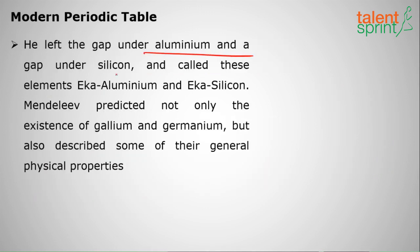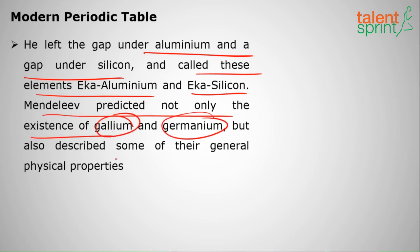He left gaps under aluminum and silicon and called those elements eka-aluminum and eka-silicon. Mendeleev predicted not only the existence of gallium and germanium - eka-aluminum was gallium and eka-silicon was germanium - but also described some of their general physical properties before they were actually discovered.